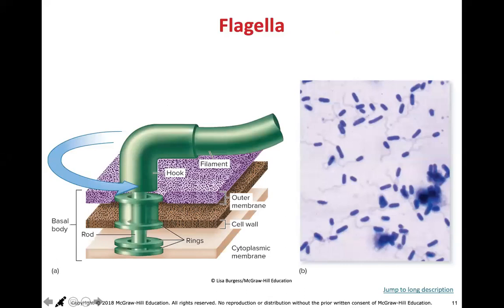Here is a picture of a flagellum. The flagella is actually anchored in the plasma membrane, the cell wall, and — in some bacteria — an outer membrane, so it's anchored into all three layers. What you see is a hook, filaments, and a basal body, which acts as the motor causing the filament to spin. The flagella rotates and the cell moves.